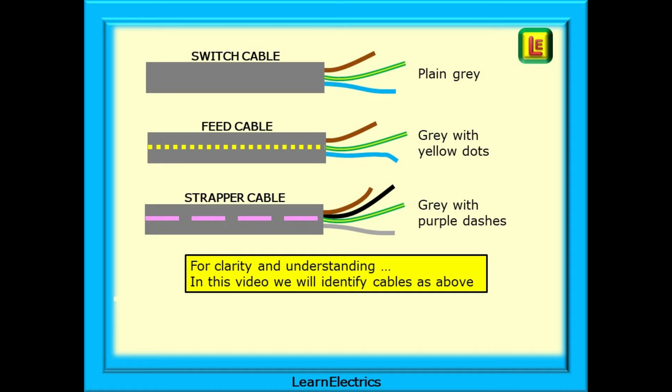For clarity and understanding in this video we will identify cables as shown here. We are using standard grey twin and earth cable and to help to identify which cable is which in the drawings we will use plain grey for the switch cables, for the feed we will mark the grey cable with yellow dots on the drawings, and for the strapper cables we will show these as grey with purple dashes.